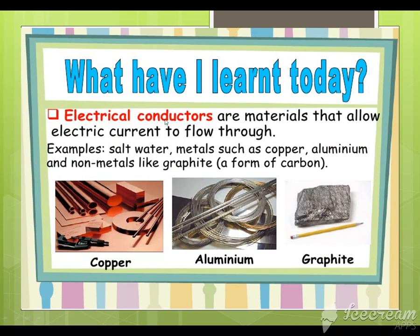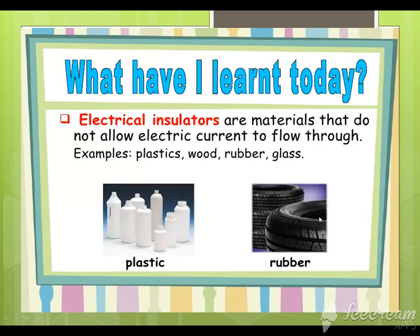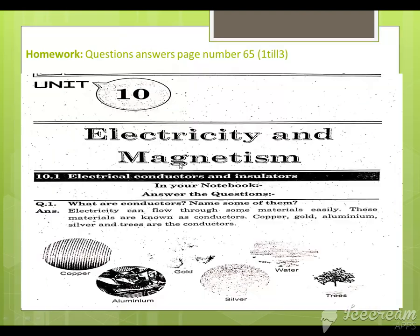Today we learned about electrical conductors — materials that allow electric current to flow through them, like copper, aluminum, and graphite. We also learned about electrical insulators — materials that do not allow electric current to flow through them, like plastic, rubber, wood, and glass.